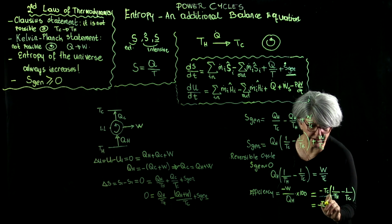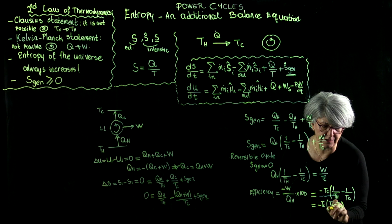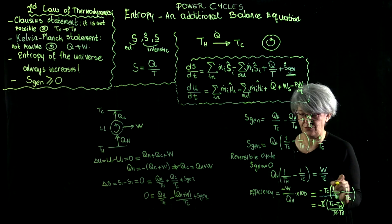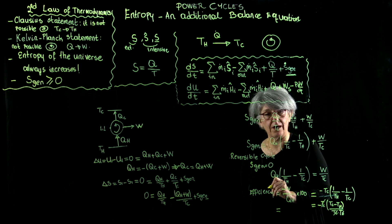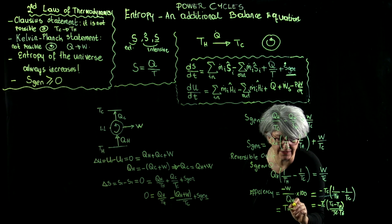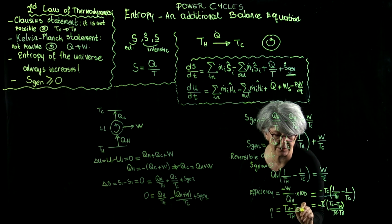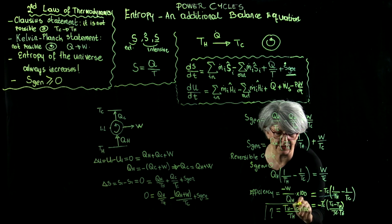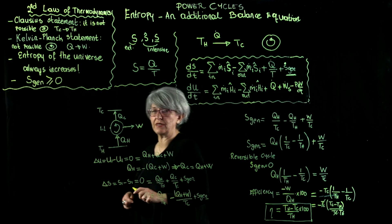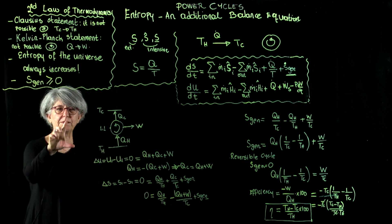Minus t sub c times t sub c minus t sub h divided by t sub c times t sub h gives us efficiency of an ideal power cycle, which is reversible, as t sub h minus t sub c divided by t sub h. This is an important parameter that gives us boundaries about the maximum amount of energy we can extract by playing between two different temperatures.